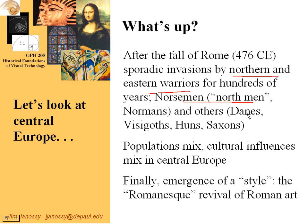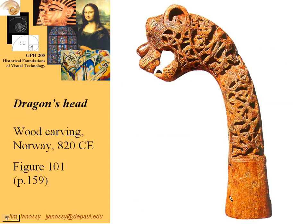Norsemen come in from Denmark and various northern countries. The populations mix, and there finally emerges a style which is Romanesque — Roman architectural forms.